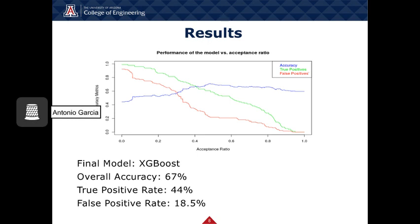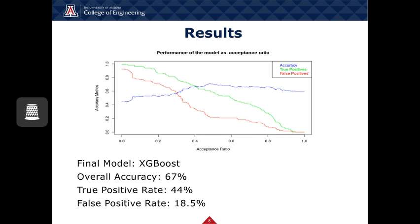The graph of the model's performance versus the acceptance ratio displays the relationship between overall model accuracy, true positives, and false positives versus an increasing model acceptance ratio. The final version of the avionics predictive maintenance model utilized the XGBoost approach from the second iteration. The results include an overall accuracy rate of 67%, against a performance requirement of greater than 50%. The true positive rate was 44%, and the false positive rate was 18.5%, against a performance requirement of less than or equal to 20%. The final model was tested and verified following the procedures defined in the verification plan document.